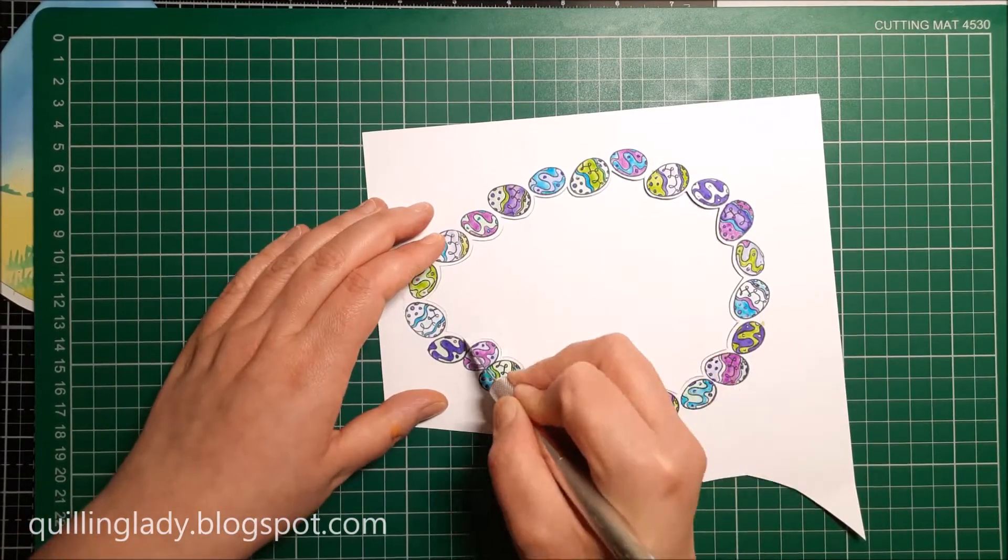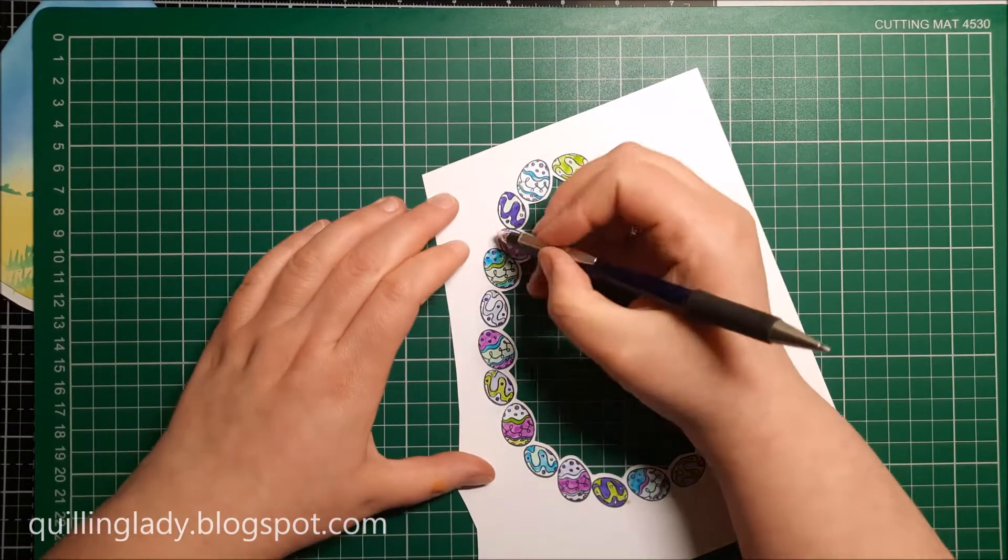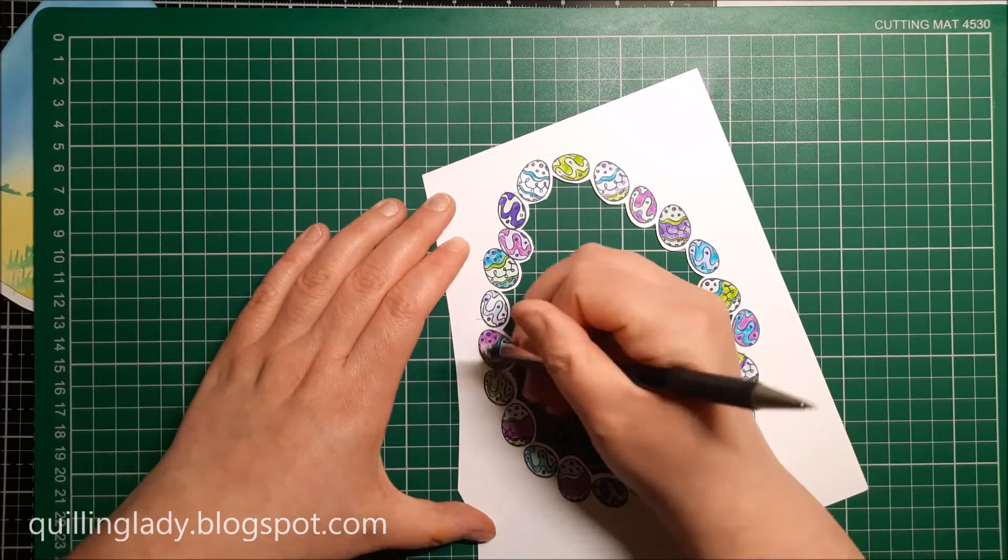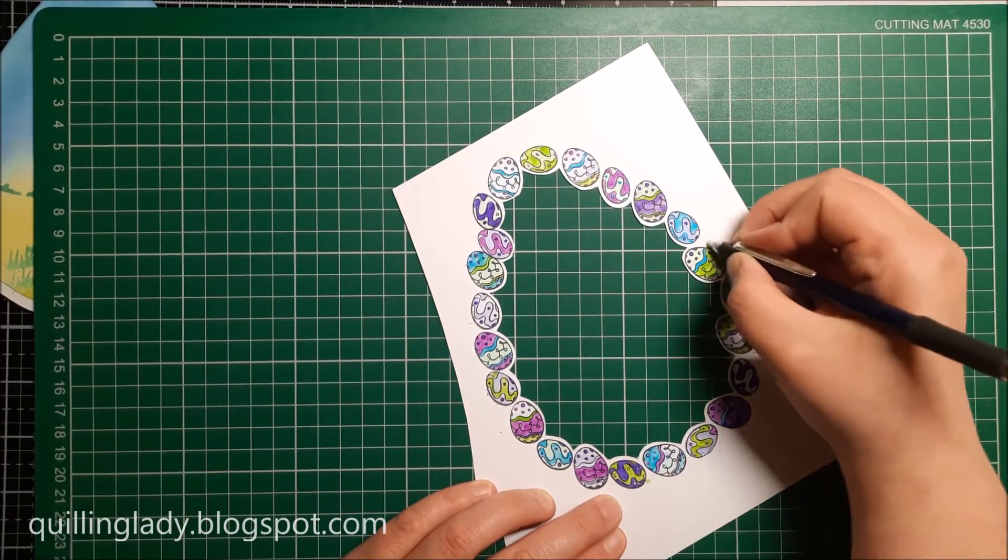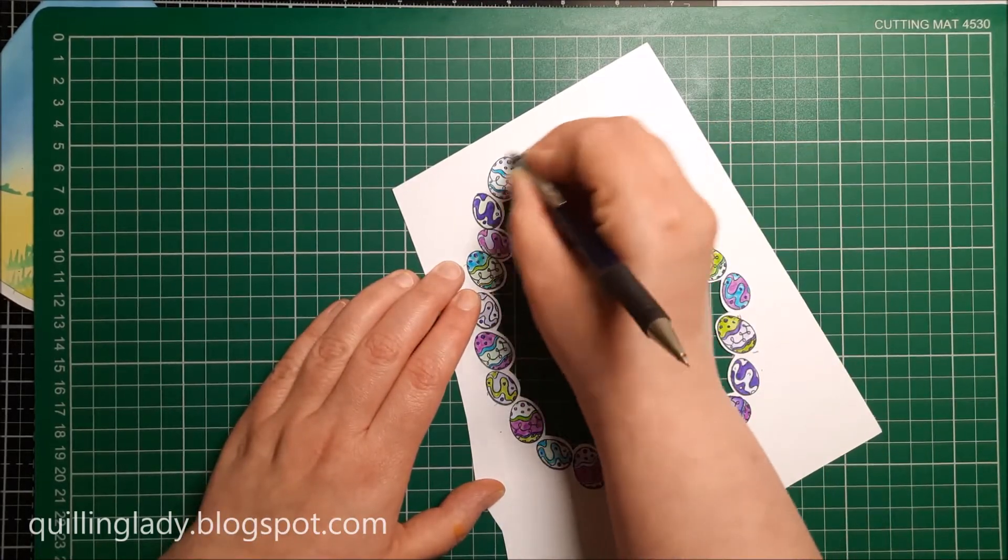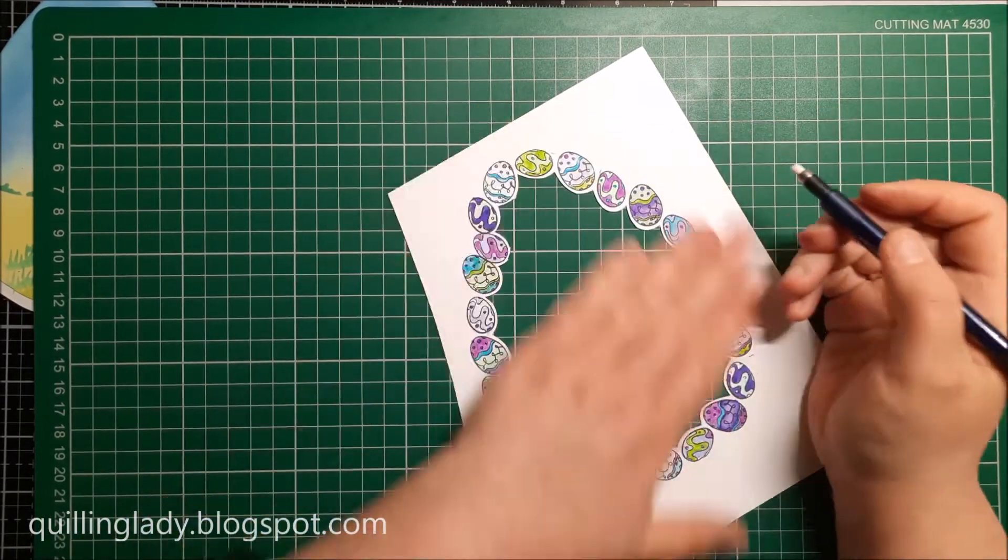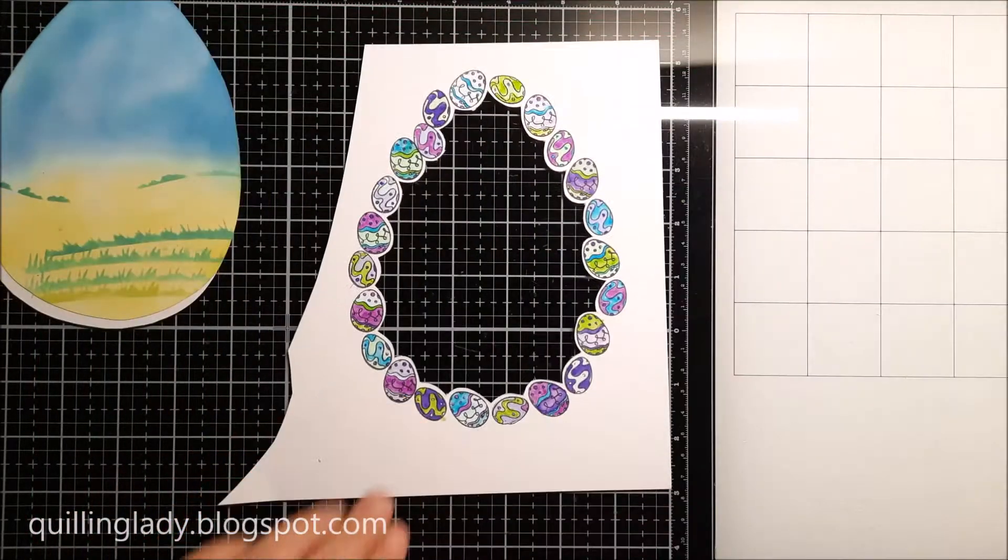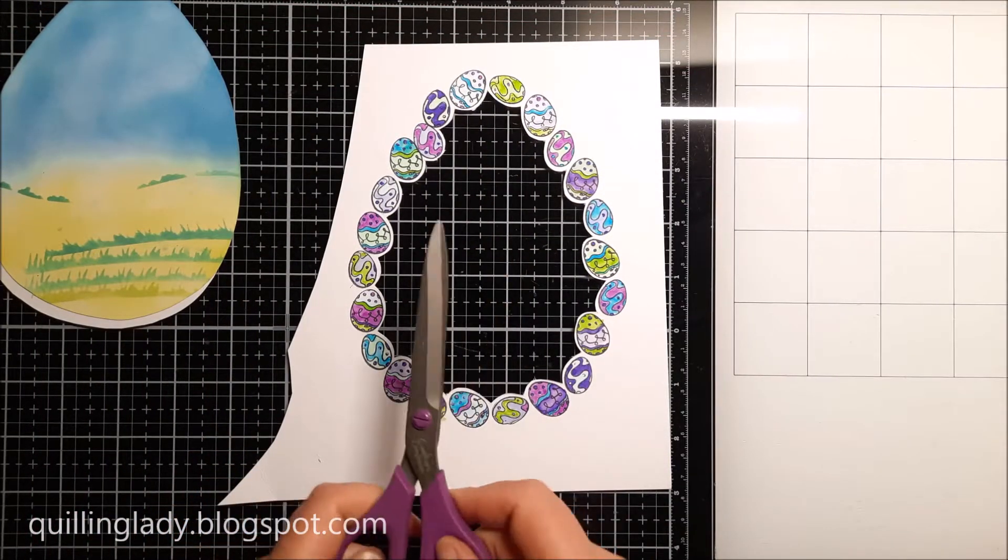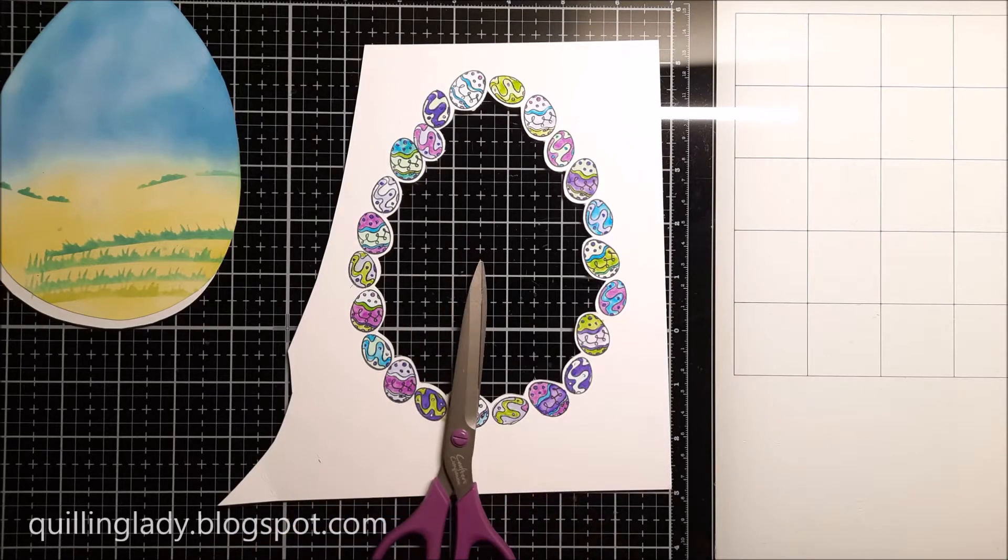Now I'm going to erase the pencil mark and I'm going to use my scissors to cut the outside of the frame, super quick and simple. This way you've got a really unique Easter card, and I really hope it will inspire you to create something similar this Easter.